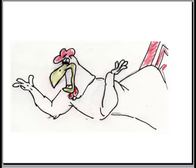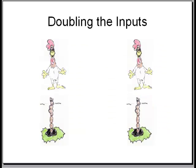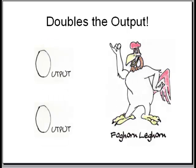Now that we have a definition of inputs and output, let's move on to returns to scale. What happens when we double the inputs? If the firm exhibits constant returns to scale, then the output doubles. Doubling the inputs doubles the output. This is known as constant returns to scale.